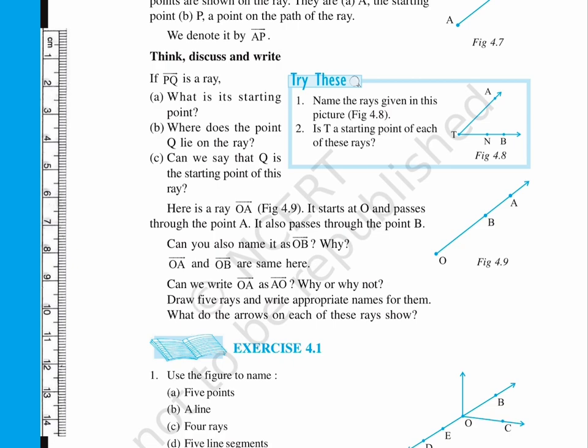OA and OB are same here. Can we write OA as AO? Why or why not? Draw five rays and write appropriate names for them. What do the arrows on each of these rays show?